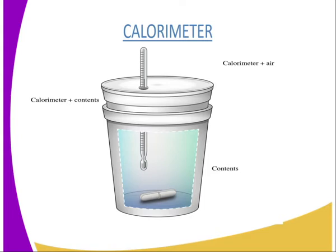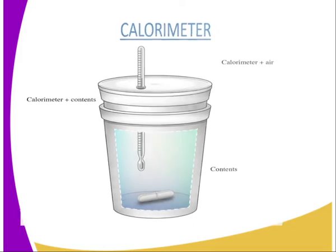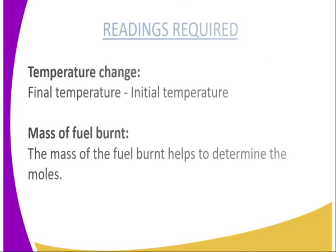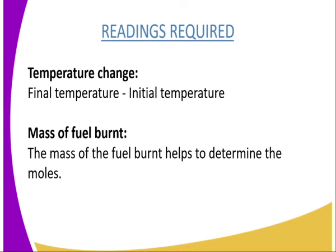We can also look at the calorimeter itself. It is normally wrapped, and in the interior part we have the fuel whose heat of combustion we want to determine. There is a lid to ensure no heat is lost to the surroundings, and oxygen is supplied to enable combustion to take place.